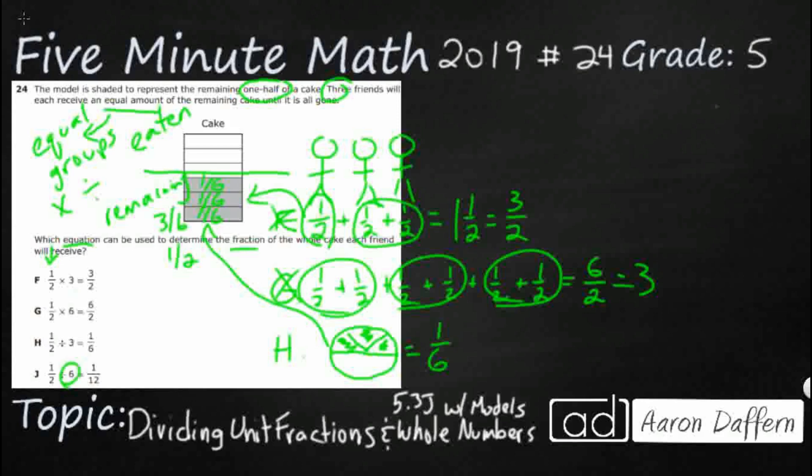You get your one half. Now, we're dividing it by six again, but there's not six people. There's only three people. Those pieces are too small. One twelfth. So, our answer is going to be H.